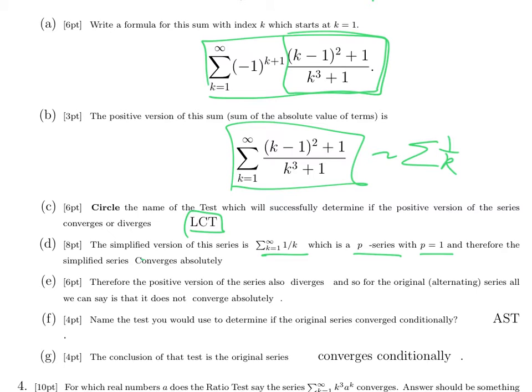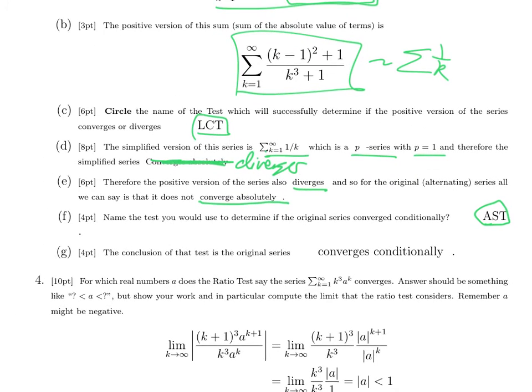And therefore, this is a mistake. The simplified series diverges. Since the simplified series diverges, the positive series also diverges. And so the original alternating series doesn't converge absolutely. Because the positive version is divergent, we need to decide between converges conditionally and diverges. It's an alternating series. So the only choice is the alternating series test, and it passes.